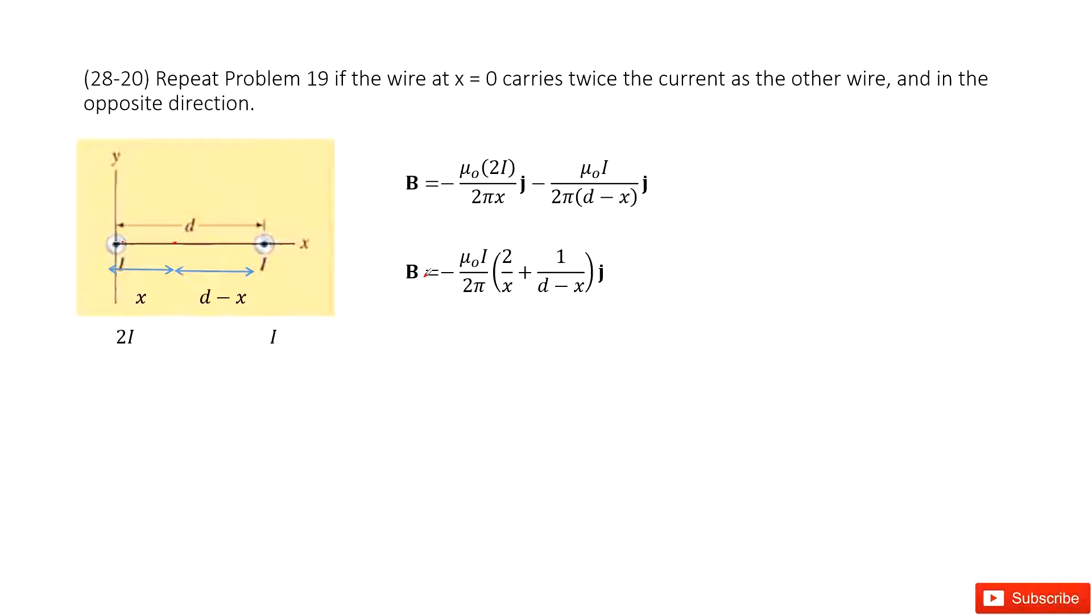Chapter 28 is about source of magnetic field. So there we have two wires and the current in opposite direction. We can consider this is a point in, this is out. And this wire with current 2i, this wire with current i.